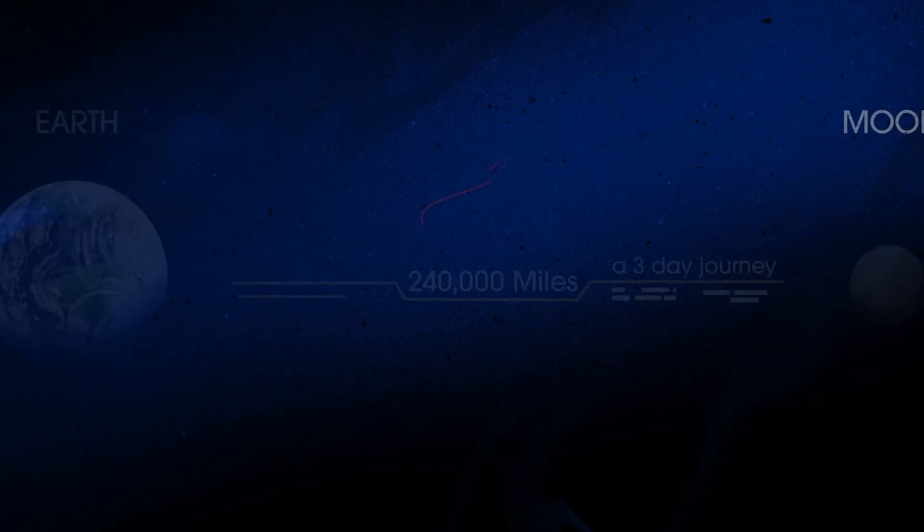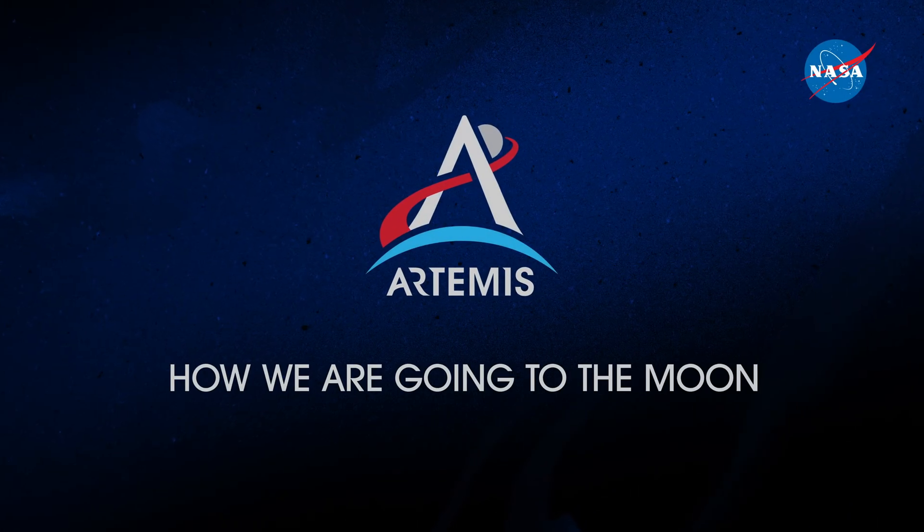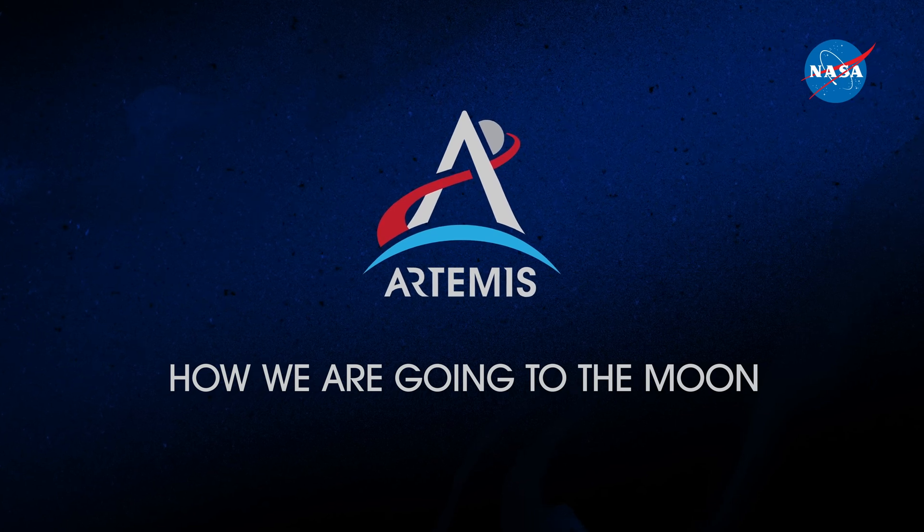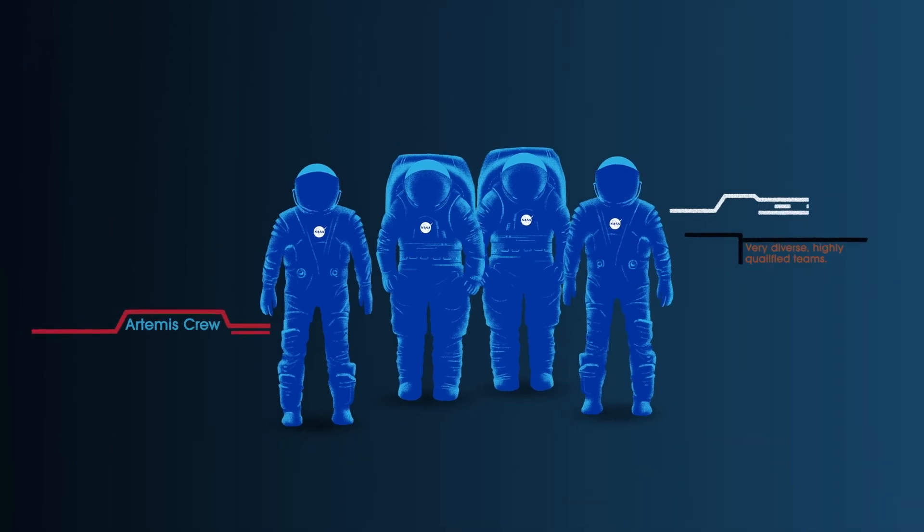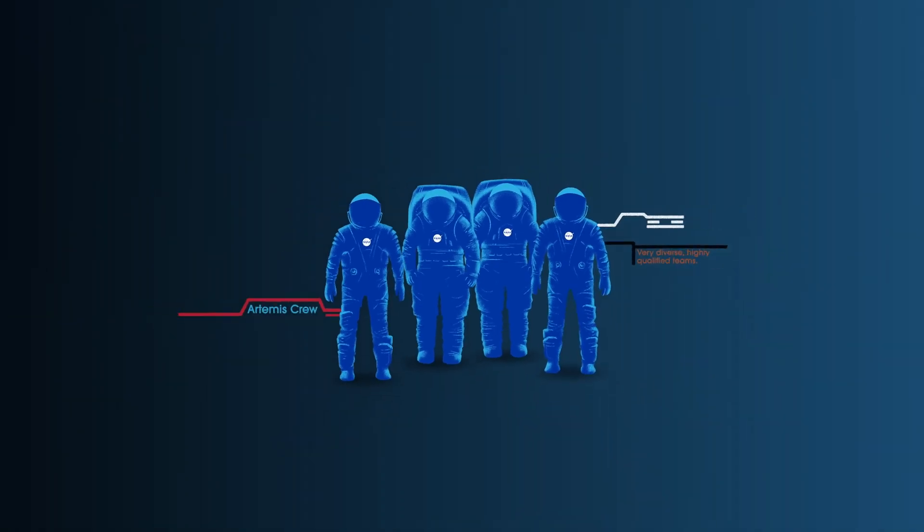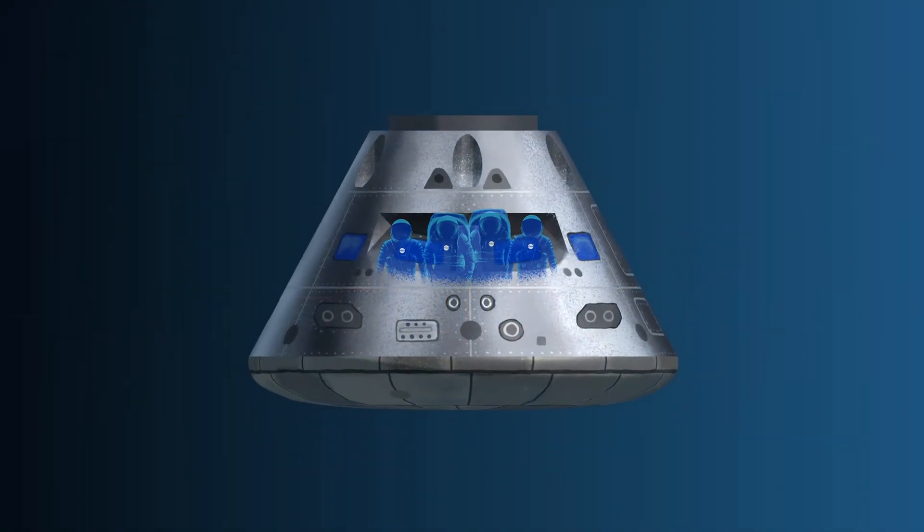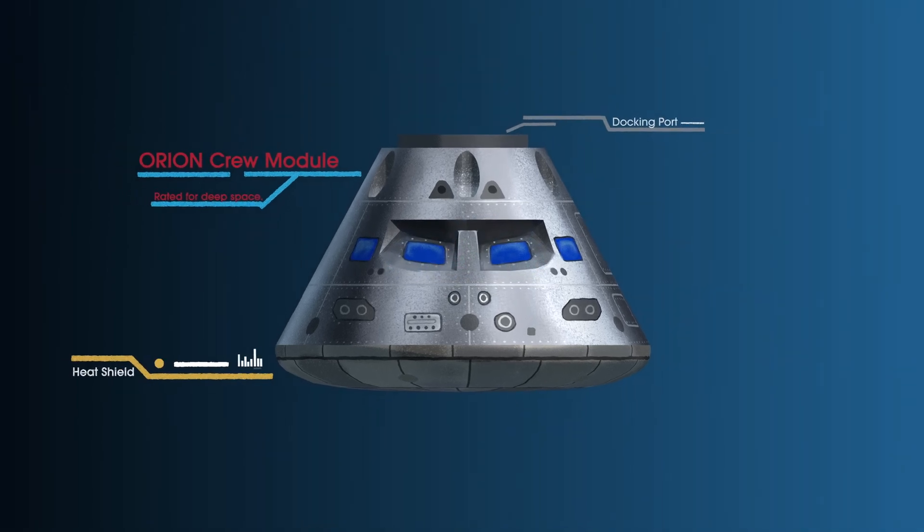So, what will an Artemis mission look like? Everything is designed and tested with our most important element in mind, the astronauts. This is their deep-space, human-rated spacecraft called Orion, built in three parts.